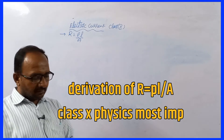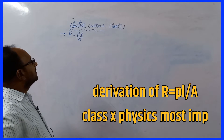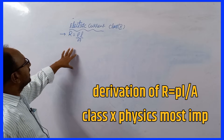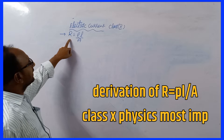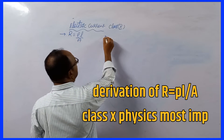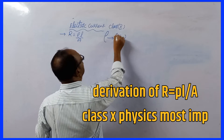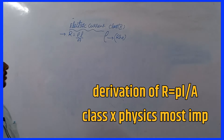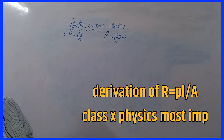Hi students, welcome to our channel. In this hour, we are going to learn about the derivation of the formula for electric resistance, R equals rho L by A. This is an important topic from the electric current chapter, important for 2 marks or 4 marks, and it also explains the laws of electric resistance.